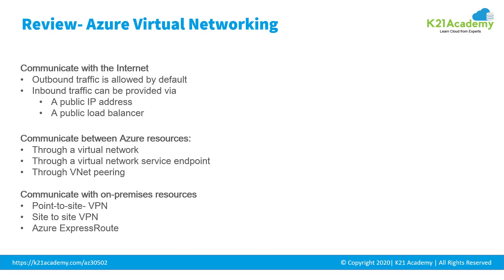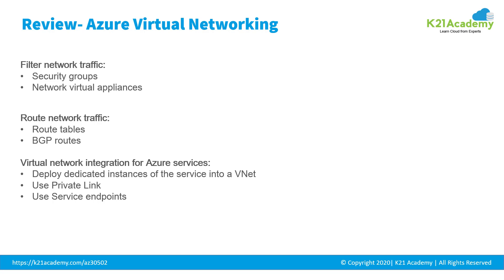Finally, we have ExpressRoute, established between your network and Azure through an ExpressRoute partner. This connection is private and very fast — traffic does not go over the internet. In the next slide, we will talk about how to filter network traffic. You can filter network traffic between subnets using network security groups (NSGs) or network virtual appliances (NVAs). NSGs and application security groups can contain multiple inbound and outbound security rules to filter traffic to and from resources by source, destination IP address, port, and protocol.